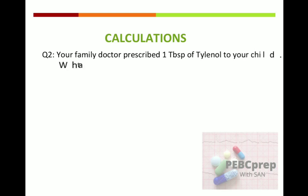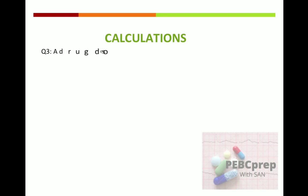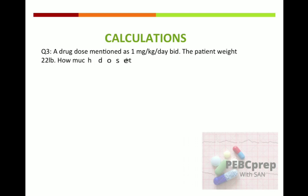Next example: your family doctor prescribed one tablespoon of Tylenol to your child. What will be the dose in ml? This is the simplest conversion — one tablespoon equals how much ml? Option A is 15 ml, option B is 5 ml, option C is 30 ml, option D is 45 ml. You have to remember that it is 15 ml.